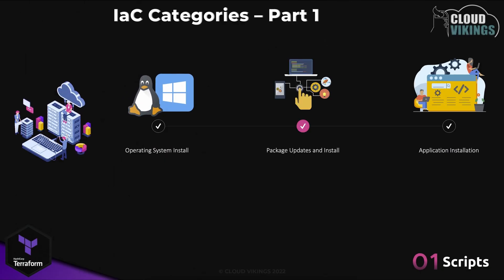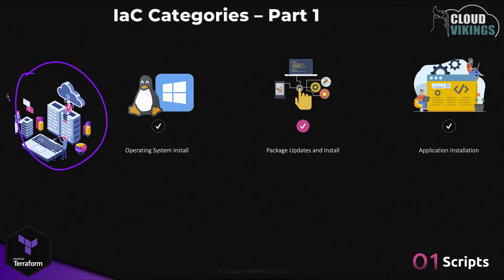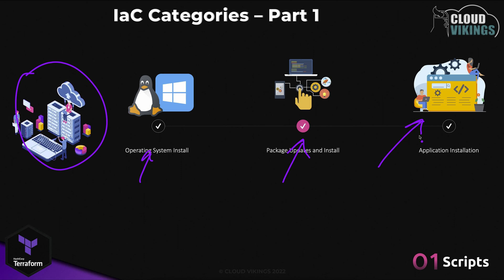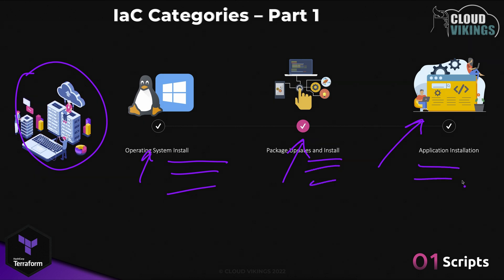Scripts are a basic way to help automate the often tedious manual configuration or setup tasks. If you have a server that you're trying to get set up and deployed for the first time in your infrastructure, you may need to install an operating system and then configure a variety of networking settings, install package updates, and then install your own application on it as well. With scripts you typically look at all the manual steps needed and then write some code to accomplish each of these steps.